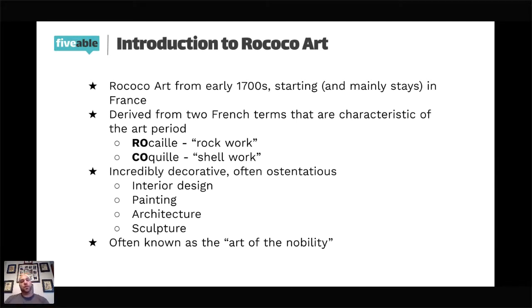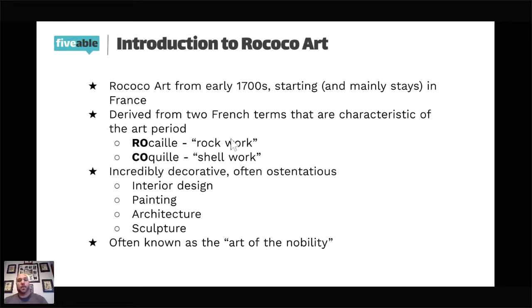Rococo art is derived from two French terms. The first is rocaille, which means rock work — a very common theme of pebble-like displays and the use of rocks in the architecture and art. And coquille, which means shell work. The shell is very, very important to Rococo design. You can see it in every room of Versailles. These two terms together give us the term Rococo.